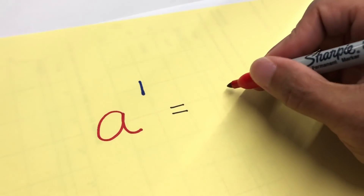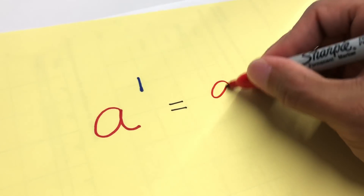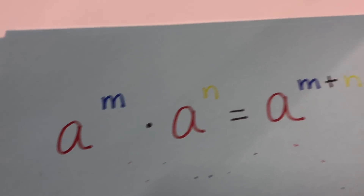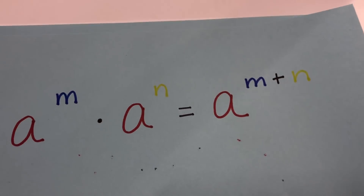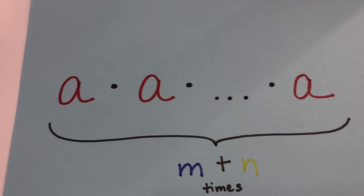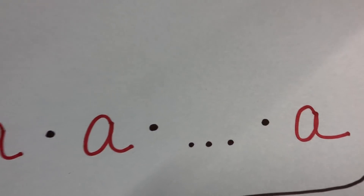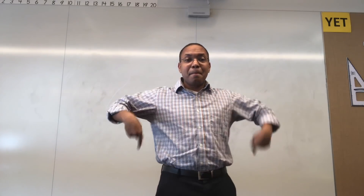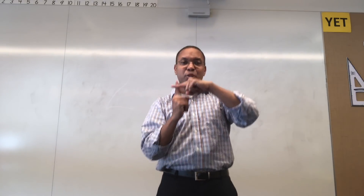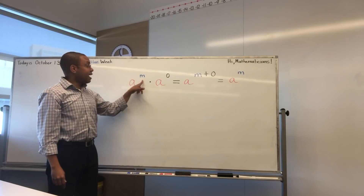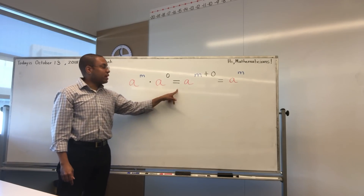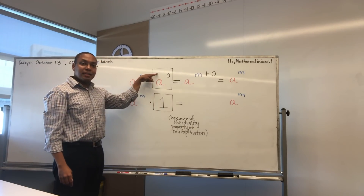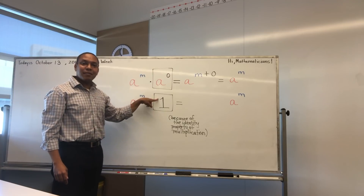A to the first means write A once — write A only once. A to the nth times A to the mth equals A to the n plus m power. Simply stated, it means A times A times... times A, n plus m times. And if you have the same base, then you're adding the exponents and evaluate. A to the nth times A to the zero equals A to the n plus zero, which equals A to the nth. A to the zero equals one — I said A to the zero equals one.